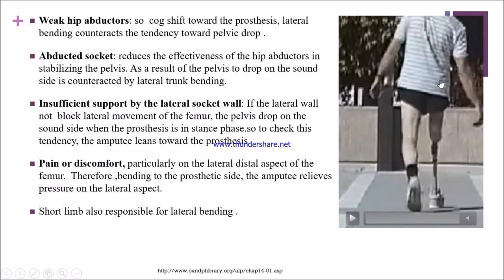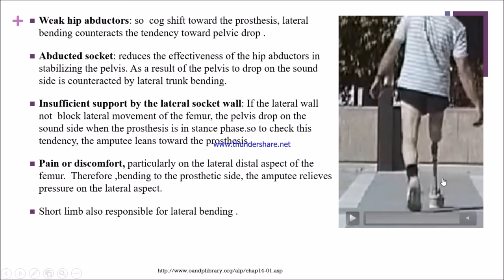If the patient has pain at the hip joint, particularly in the lateral distal area near the femur, the patient will bend toward the prosthetic side to relieve pressure on the lateral aspect. If the patient has a short limb, this is also responsible for lateral trunk bending, as the patient will try to lean toward the affected side.